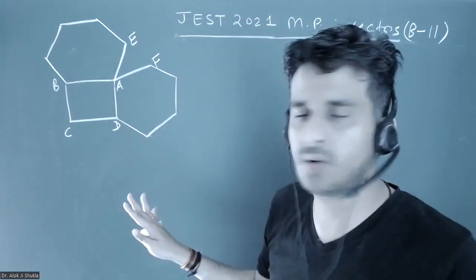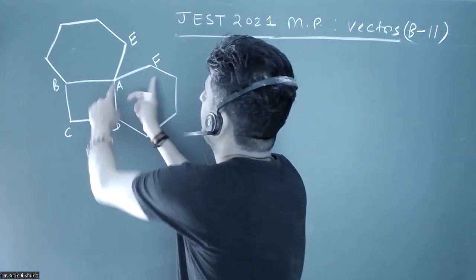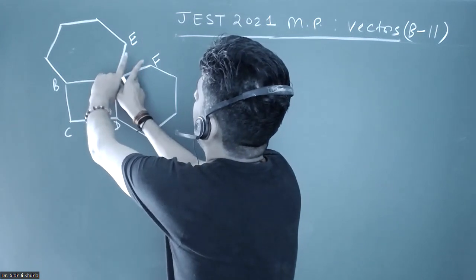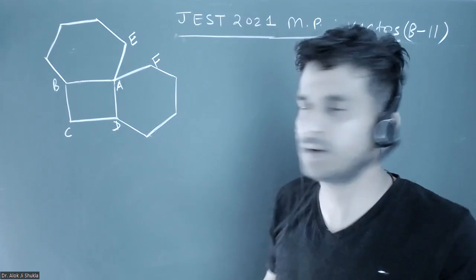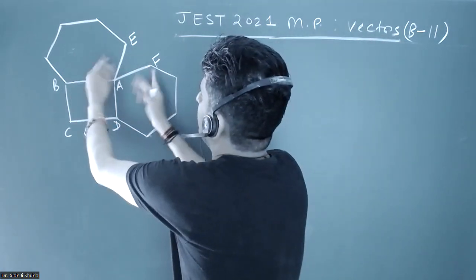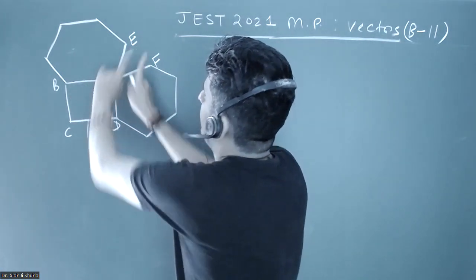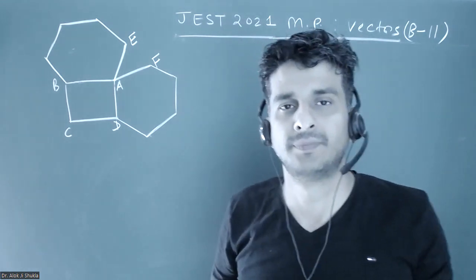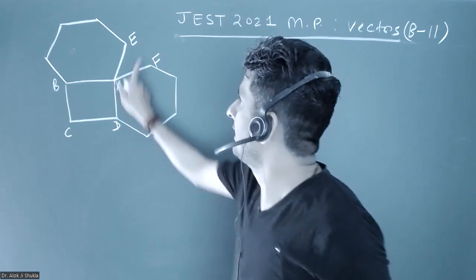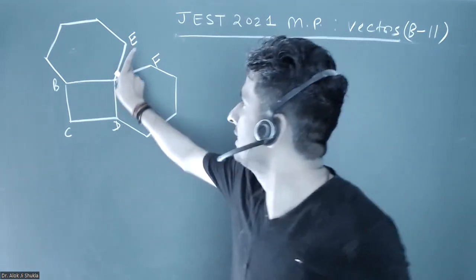If you lift it, points A and F will come together and be joined, so this will become a single line. When lifted and joined, they've asked about the angle that AF and A make once they are combined.